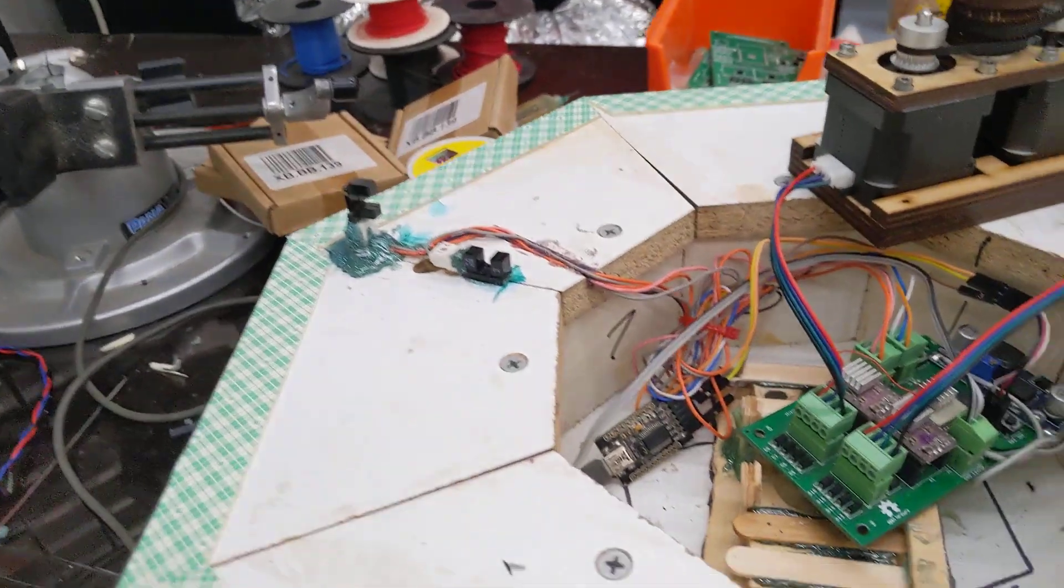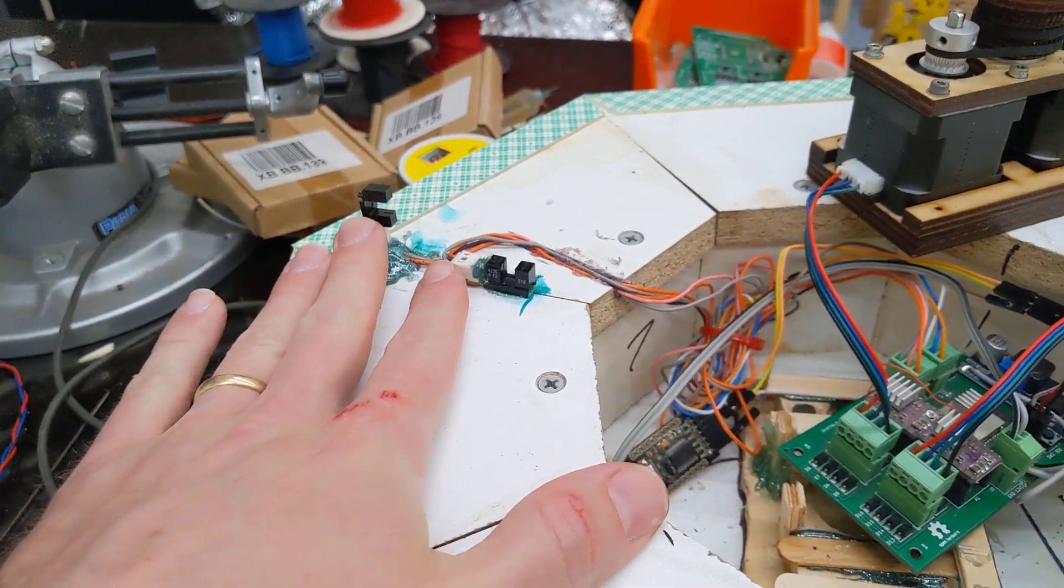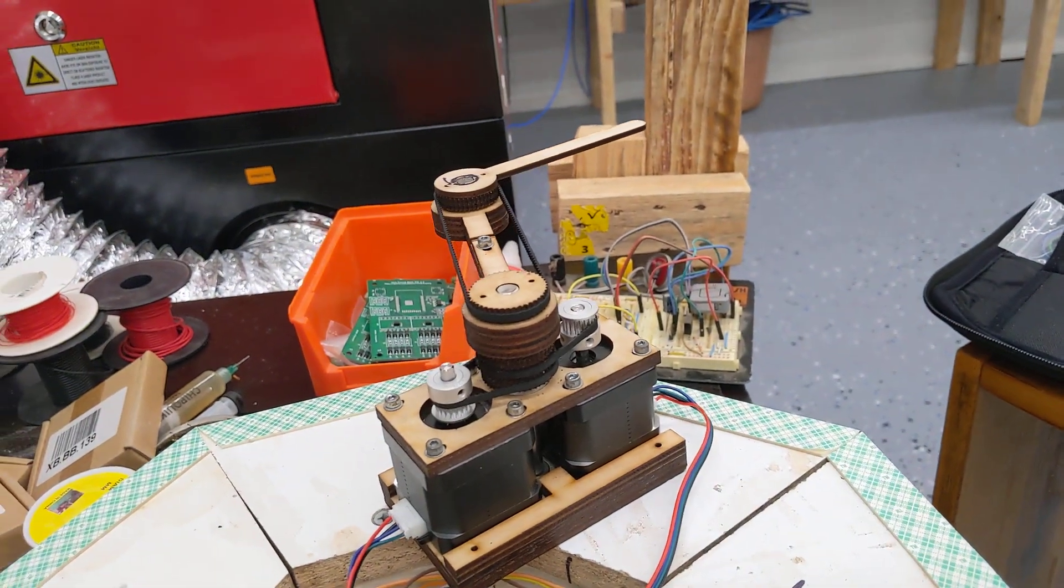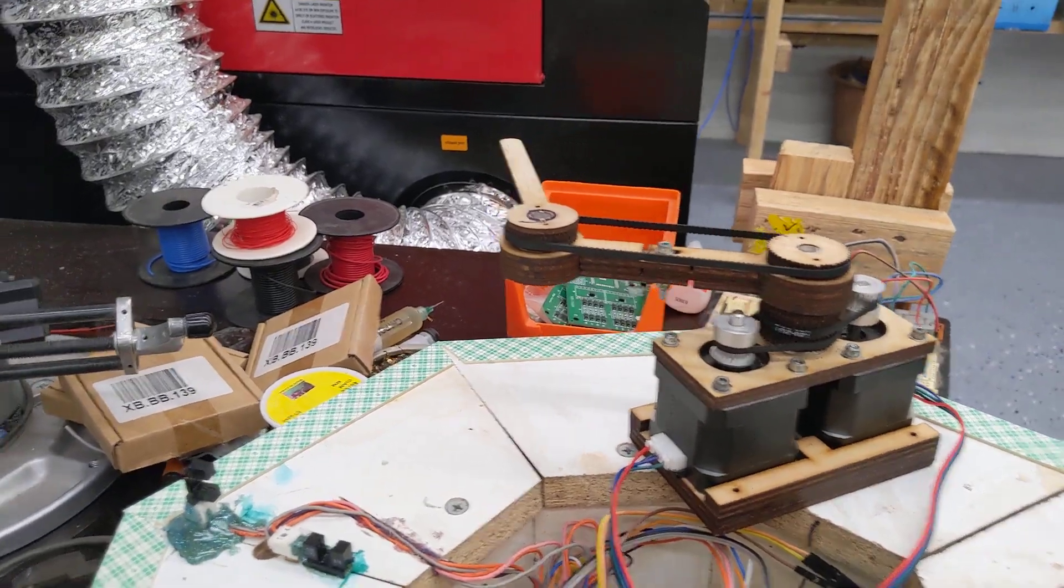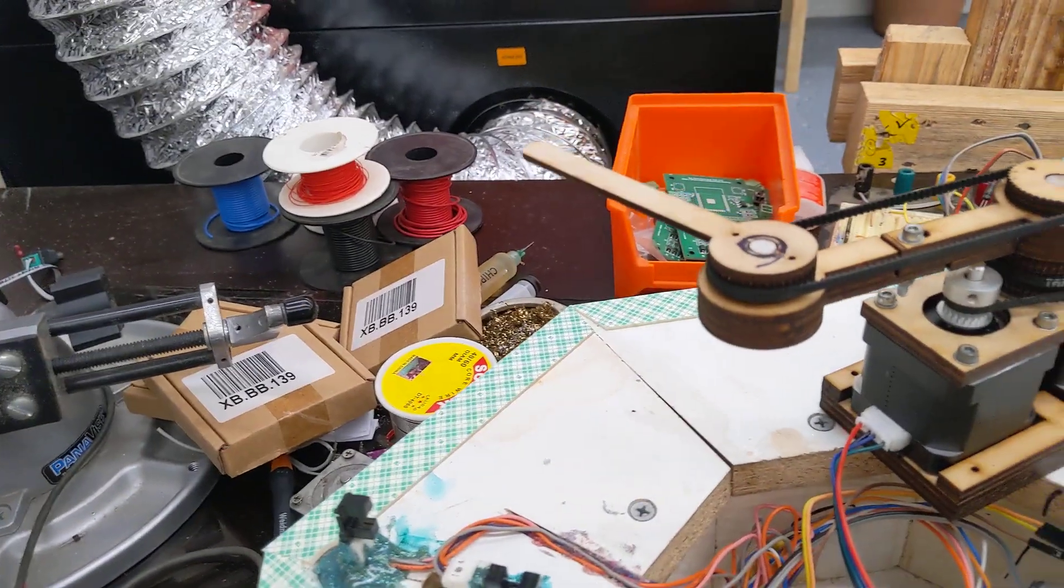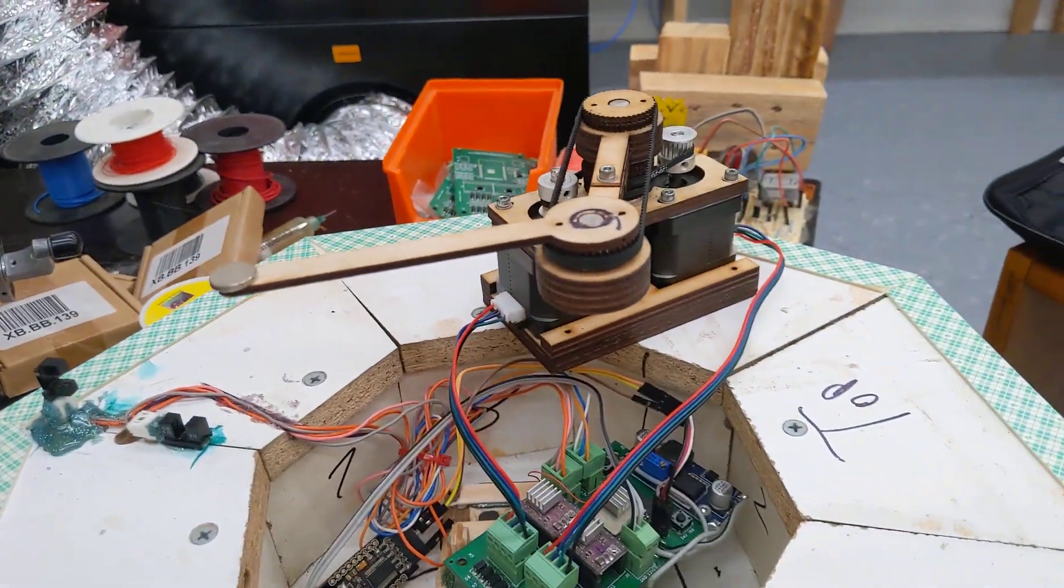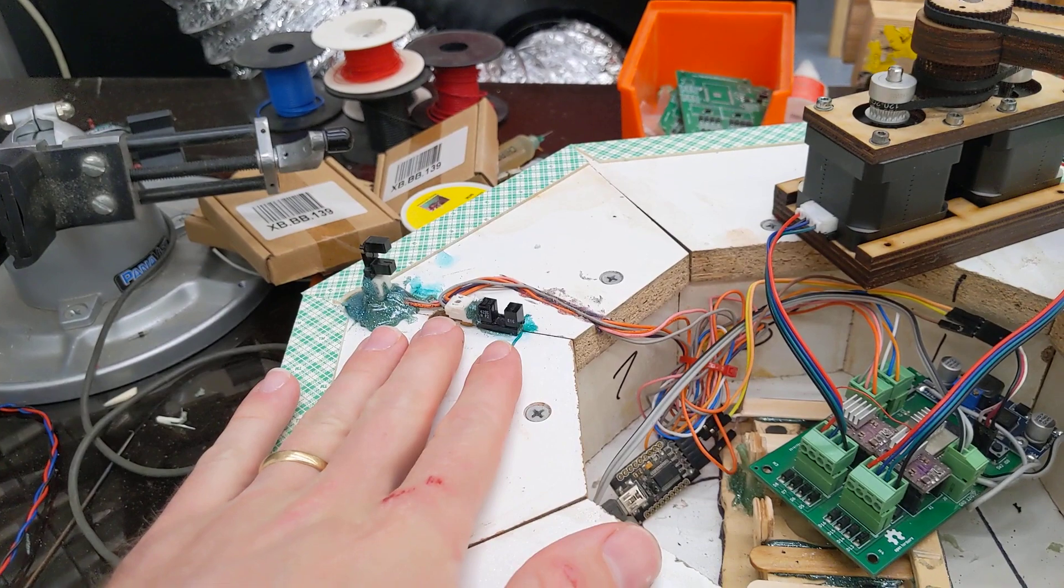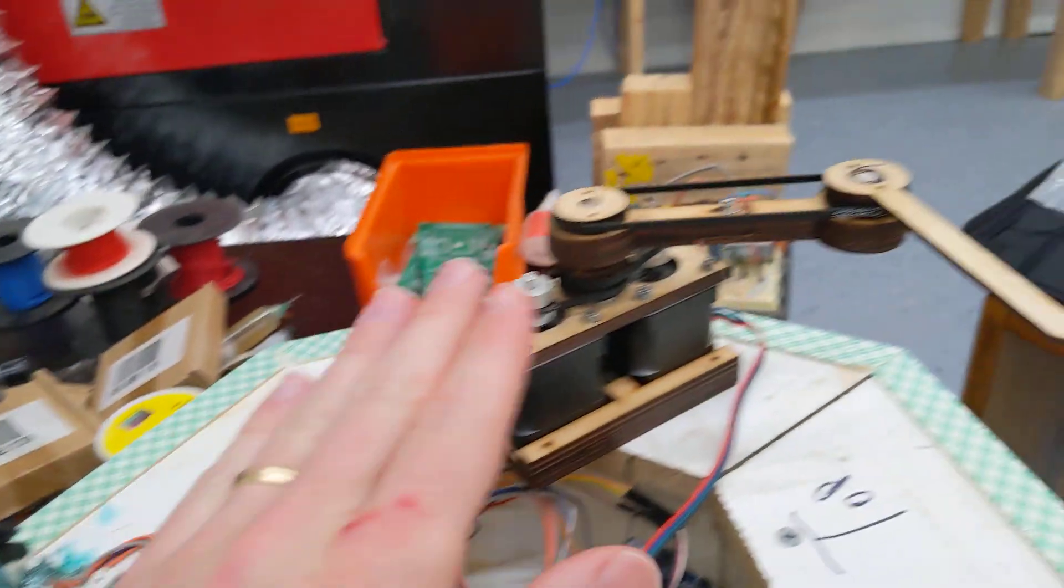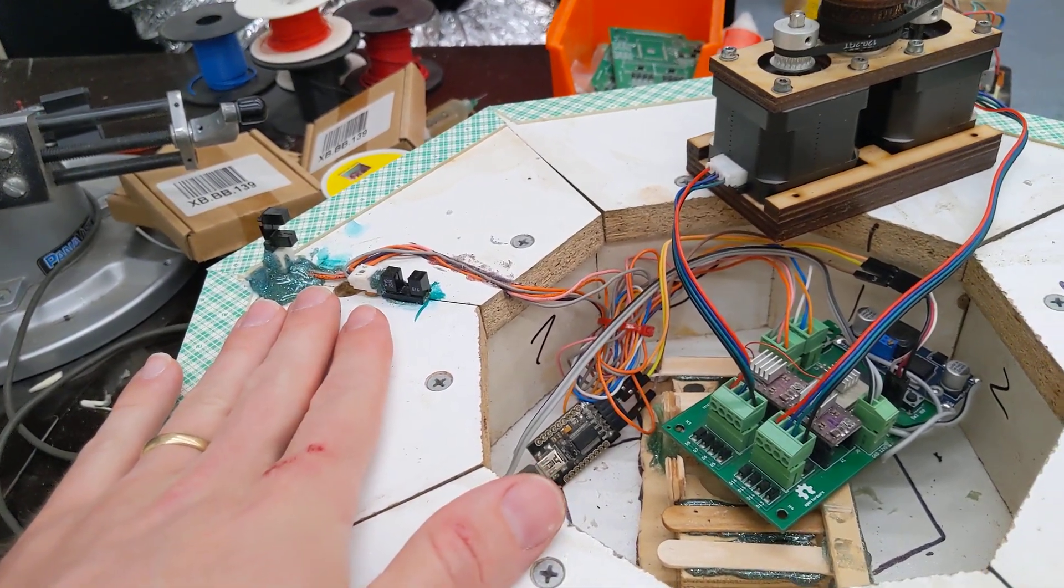This design, the old one, has got these slotted opto switches to do the homing because you need to home the arms before you can get absolute coordinates moving the magnets around. There's no magnet on this one currently but the magnet will attach on the end of there. These ones are for measuring the position of the arms in absolute terms with reference to the bed. But these are a bit of a pain in the butt.